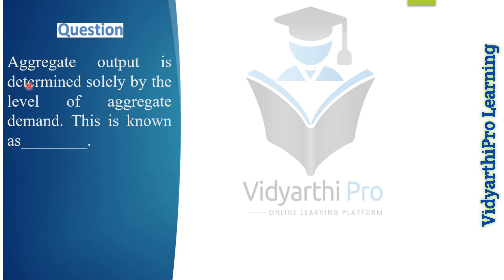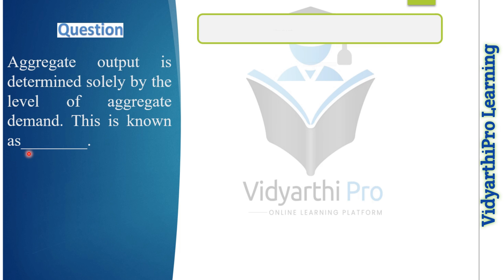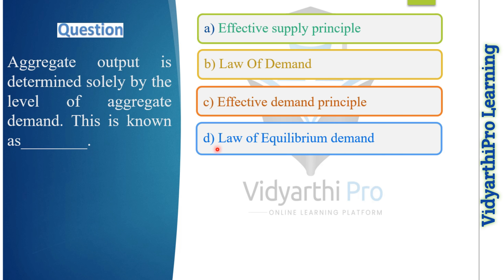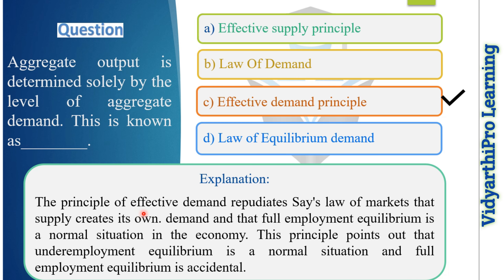Our next question: 'Aggregate output is determined solely by the level of aggregate demand' — this is known as what? Options: effective supply principle, law of demand, effective demand principle, or law of equilibrium demand. The correct answer is option C, effective demand principle. The effective demand principle repudiates Say's Law of Markets — that supply creates its own demand — and holds that full employment equilibrium is not the normal situation. Rather, under-employment equilibrium is the normal situation and full employment equilibrium is accidental.